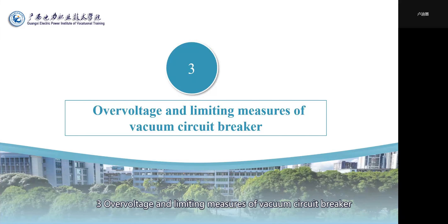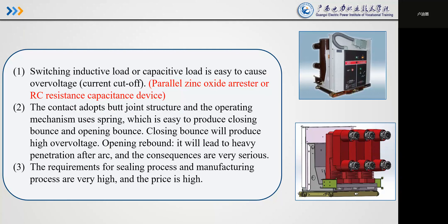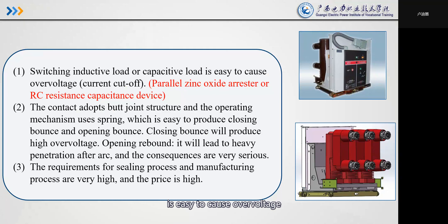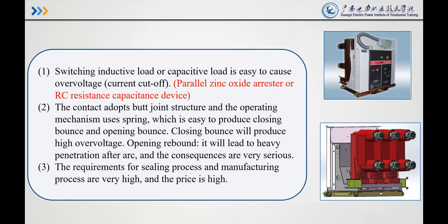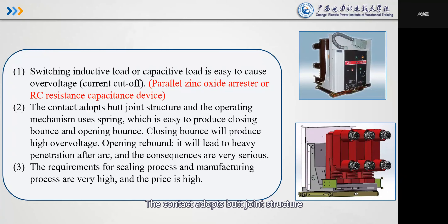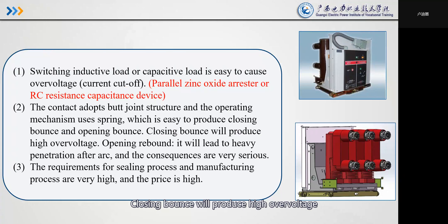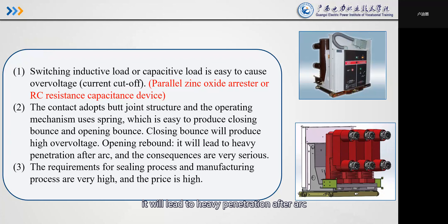Section 4: Overvoltage and limiting measures of vacuum circuit breakers. Switching inductive load or capacitive load is easy to cause overvoltage. Causes include: (1) current cut-off; (2) parallel reignition. The contact adopts a bolted joint structure and the operating mechanism uses springs, which is easy to produce closing bounce and opening bounce. Closing bounce will produce high overvoltage; opening bounce will lead to heavy re-ignition of the arc, and the consequences are very serious.